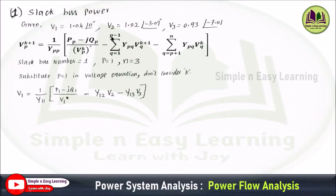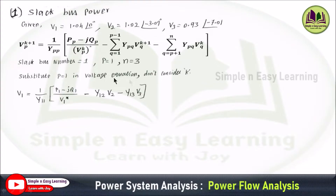In the first summation, q varies from 1 to p−1; since p = 1, this gives 0 terms. In the second summation, q varies from p+1 to n, so q = 2 and q = 3, giving two terms: Y12·V2 and Y13·V3. From this V1 equation, since V1, Y11, Y12, Y13, V2, and V3 are all known, the only unknown is P1 − jQ1. We derive the equation for P1 − jQ1.